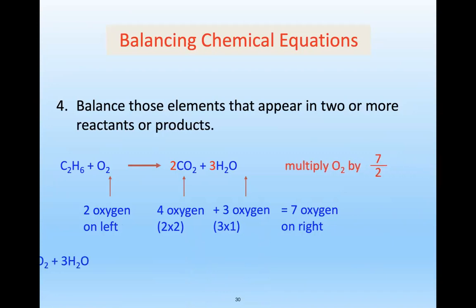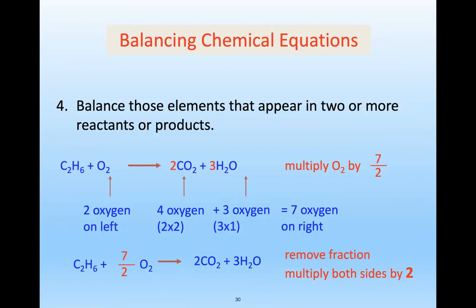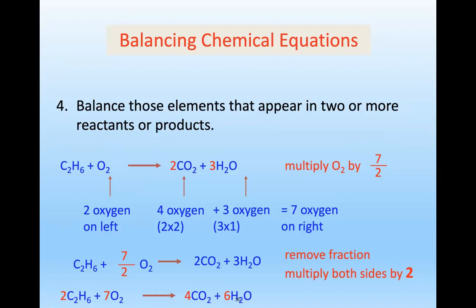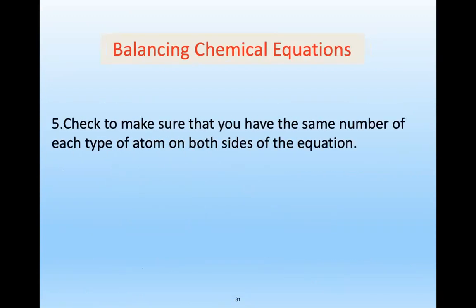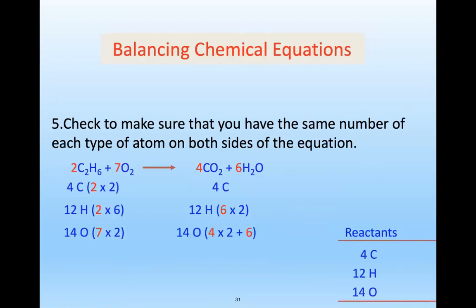To remove the fraction, multiply both sides by 2: 2C2H6 + 7O2 → 4CO2 + 6H2O. Check: carbon 4 = 4 ✓, hydrogen 12 = 12 ✓, oxygen 14 = 14 ✓. The equation is balanced. Always check that the number of each type of atom is the same on both sides — reactants on the left, products on the right.